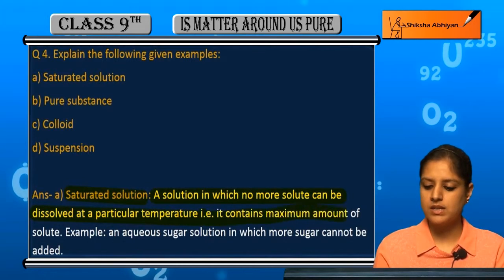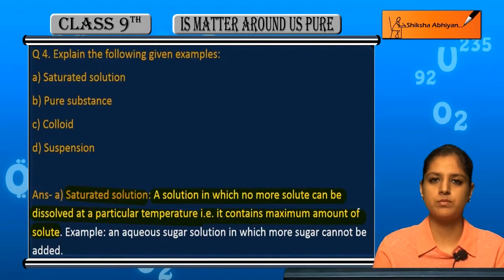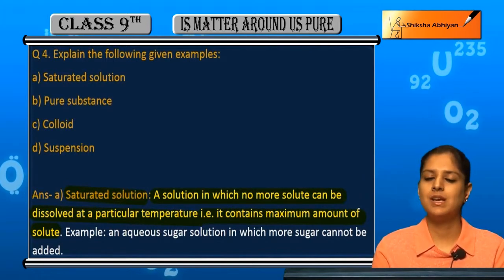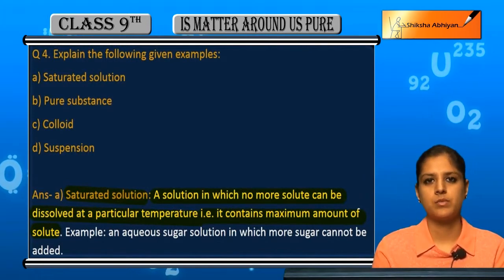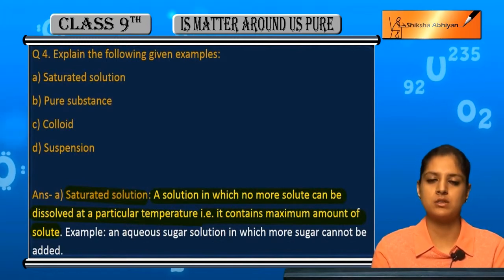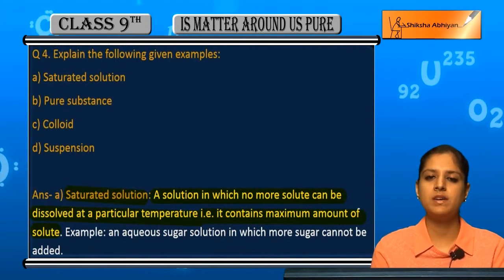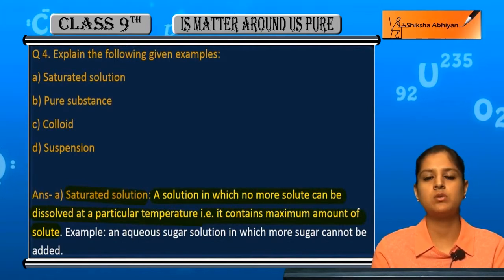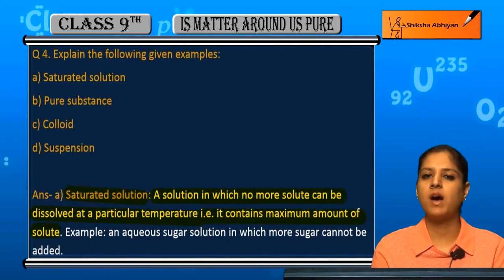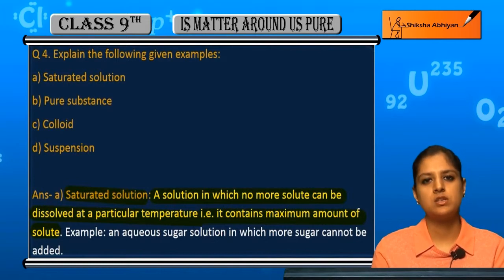A saturated solution contains the maximum amount of solute. Matlab usne or solute nahi dal saka — usme maximum amount of solute hai jitna uske andar add ho saka. Ek particular temperature pe kisi bhi ek solvent ke andar jitna maximum solute taal saka, uski end point hoti hai ki uske baad solute add nahi kar sakte — usko hum kehte hain ek saturated solution.